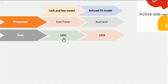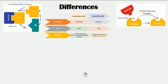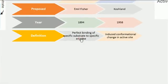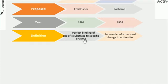The third difference is the definition of these two models. According to the Lock-and-Key model, it explains the perfect binding of a specific substrate to a specific enzyme. It means that one specific enzyme can catalyze only a specific substrate, and other than that substrate, the enzyme is not going to work.